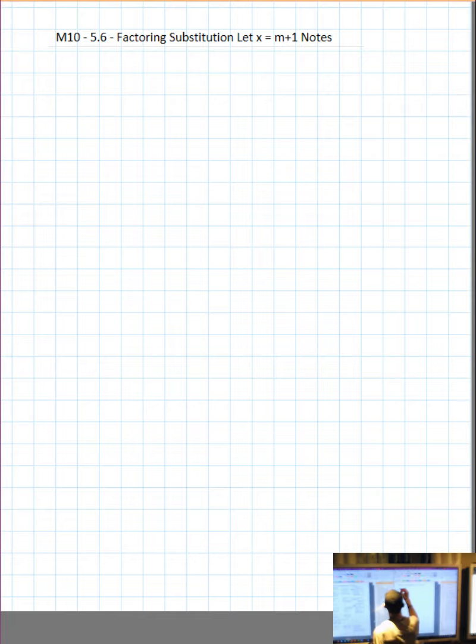Okay, factoring by substitution. Let's take m plus 1 squared plus 5 open bracket m plus 1 plus 6. Now as you can see off to the right, I've foiled it all out, combined like terms and factored it. We're going to try and get that same answer.